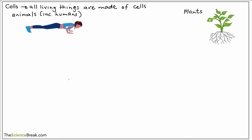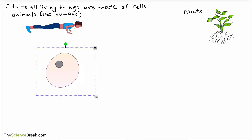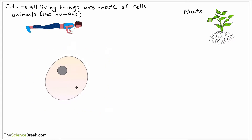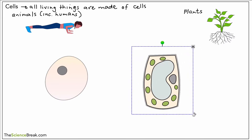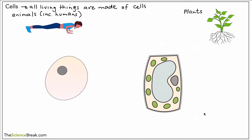Let's take a cell from our person over here and magnify it — this is what a skin cell might look like. And we can take a cell from our plant and magnify that as well. These are quite simple cells that we can use because they're quite easy to label. Here's our animal cell on the left-hand side and on the other side we've got our plant cell.